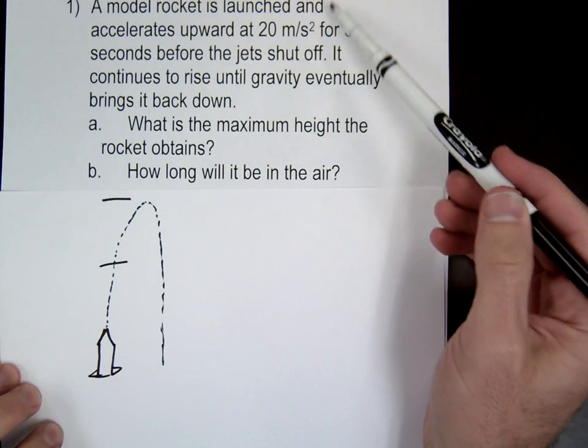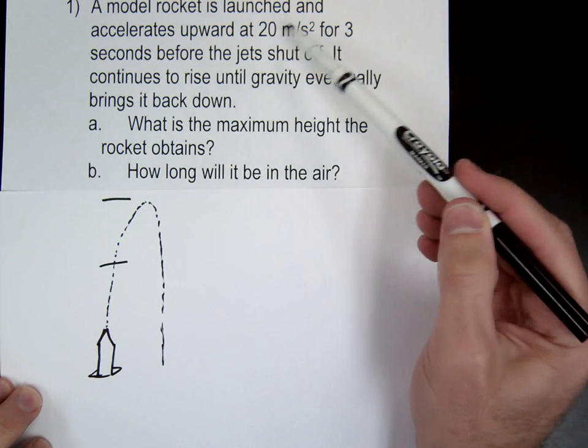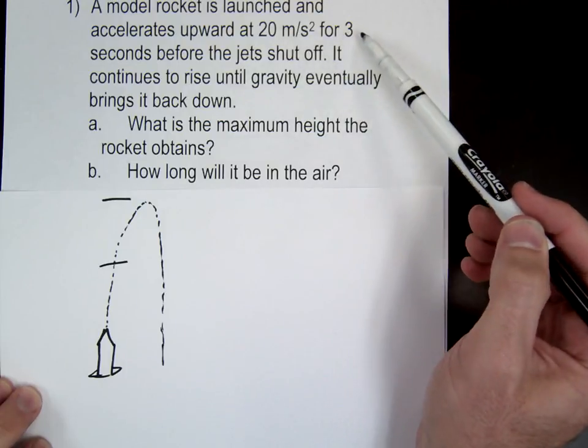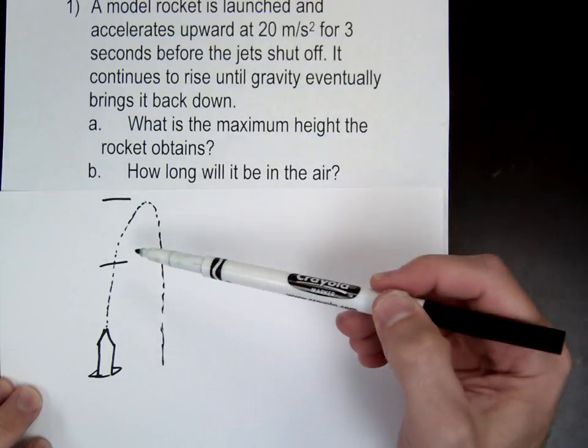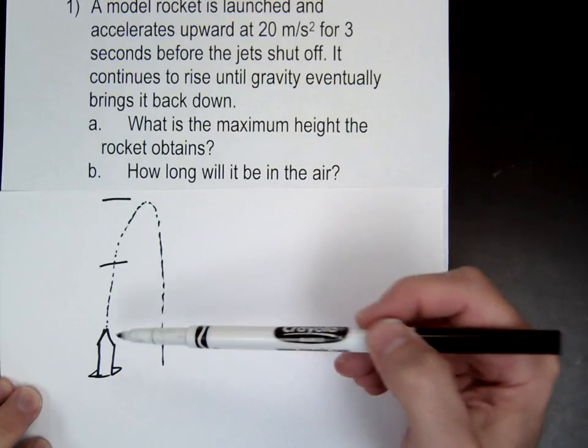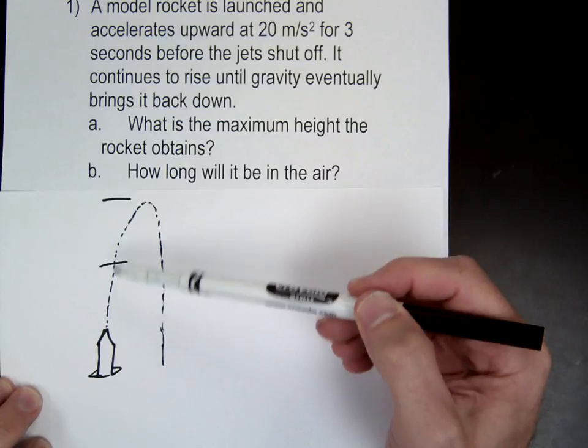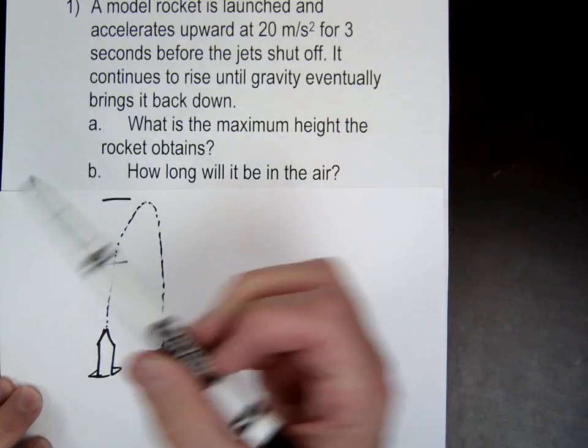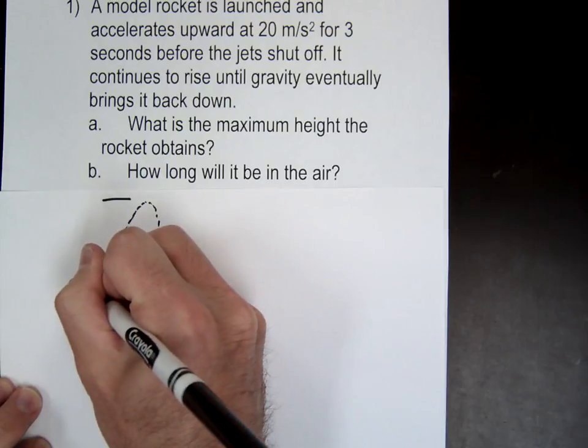Okay, so in this problem we have our rocket, right? We're going to launch it up with an acceleration for 3 seconds, 20 meters per second squared for 3, and then the jets shut off. It's going to reach its maximum and then come back down. So you can break this up into 3 sections, from the bottom to the top during the acceleration.